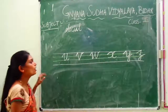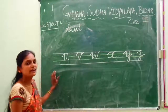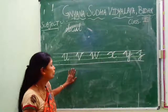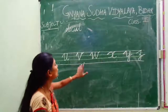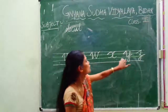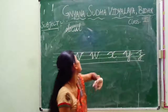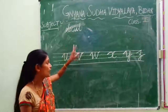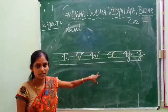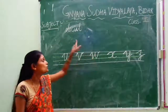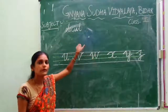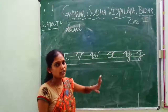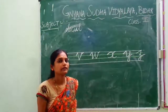So how many letters we have learnt here? Six letters. And what are those? U, V, W, X, Y, Z. So what is today's homework? You have to write all these six letters in your social book five times. Okay children, thank you.